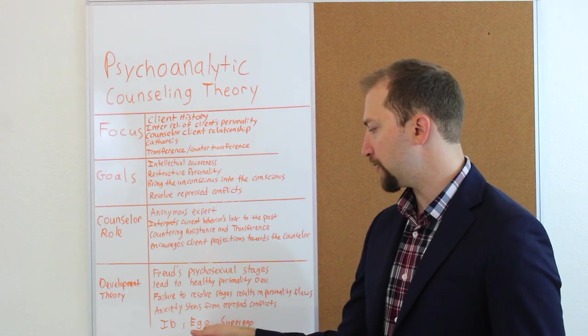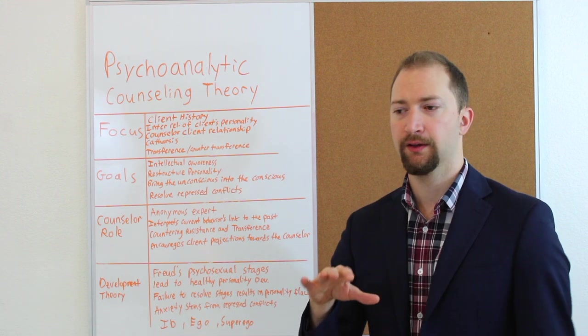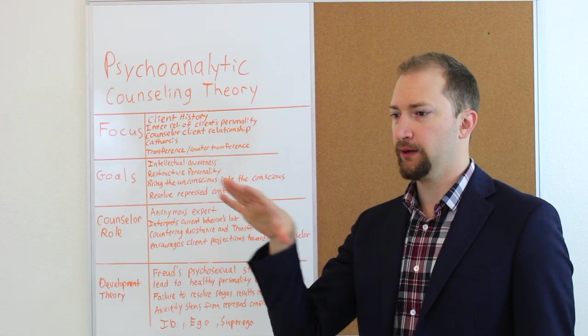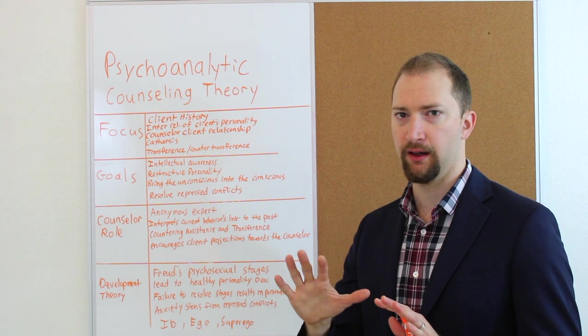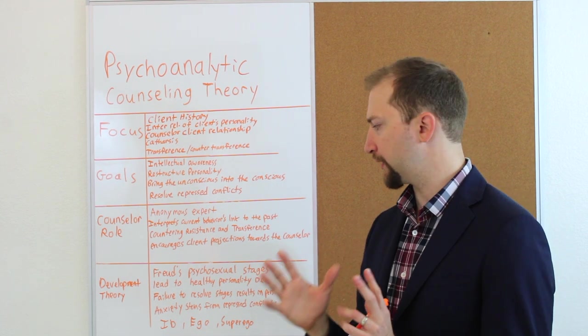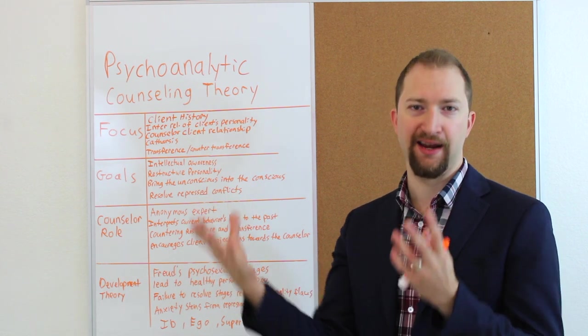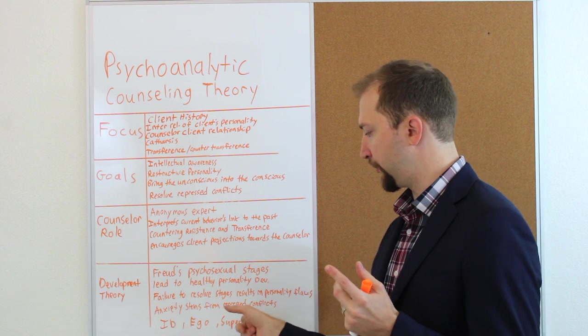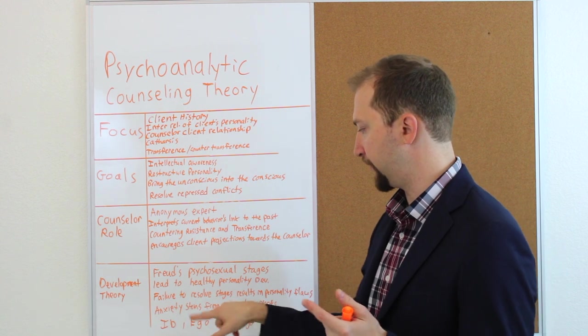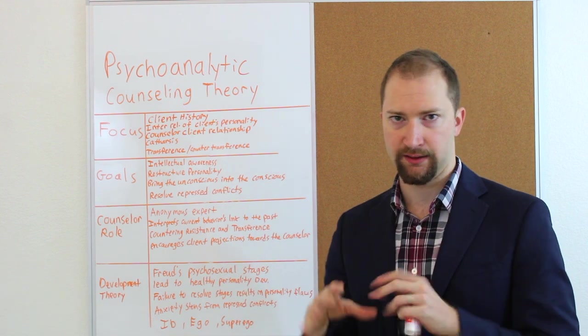Then we have the ego, which is like the realist. We're trying to attach reality to what's going on. It's like that rationale. Very, very realistic. So the ego is kind of like a mediator and a balancing act between the id and the superego, which are opposite of each other. So the ego kind of blends them all in nicely.